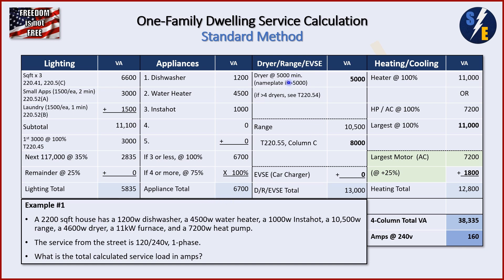Next, we've got our dryer — minimum 5,000. Ours is 4,600, so we put 5,000 since that's as small as you can go. Moving on to our range: it's a 10,500-watt range. We go to table 220.55, column C, and it tells us that a single range has a demand value of 8 kW, so we put 8,000. We don't have an EVSE car charger, so zero there. We add 5,000 and 8,000 together and get 13,000 for our column total.